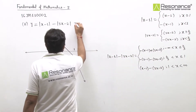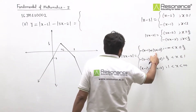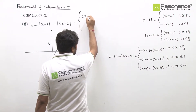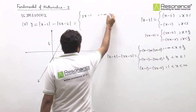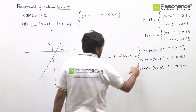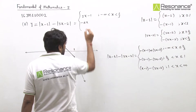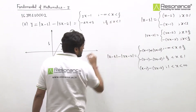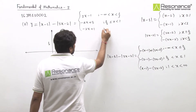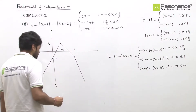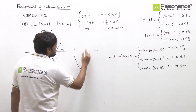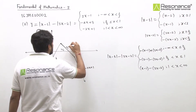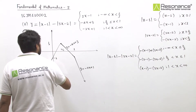On simplification: for x less than 2/3, y = minus x plus 1 plus 3x minus 2 = 2x minus 1. For x between 2/3 and 1, y = minus x plus 1 minus 3x plus 2 = minus 4x plus 3. For x greater than 1, y = x minus 1 minus 3x plus 2 = minus 2x plus 1.